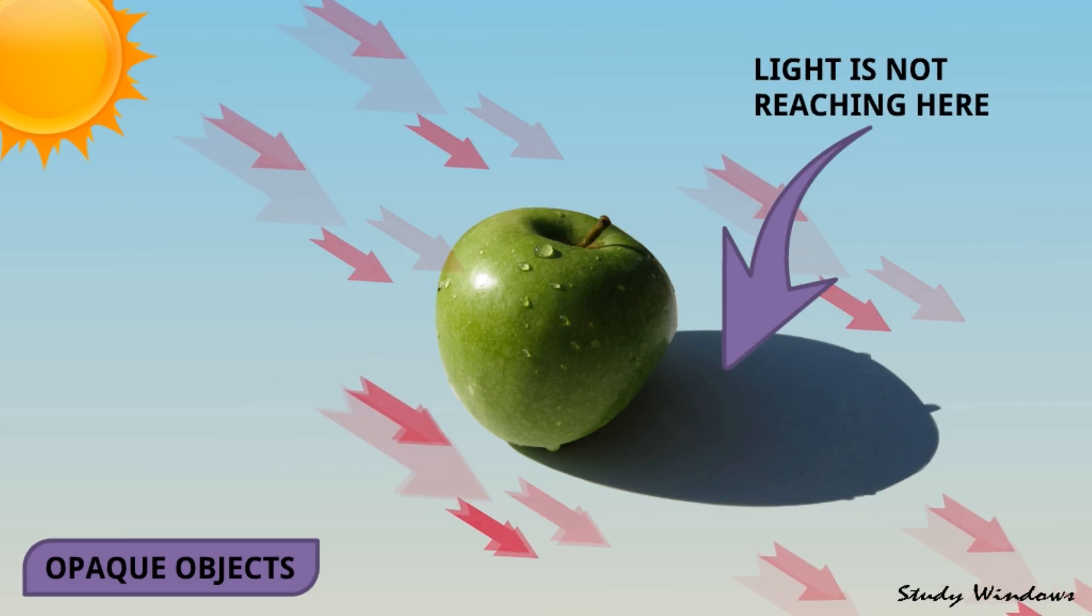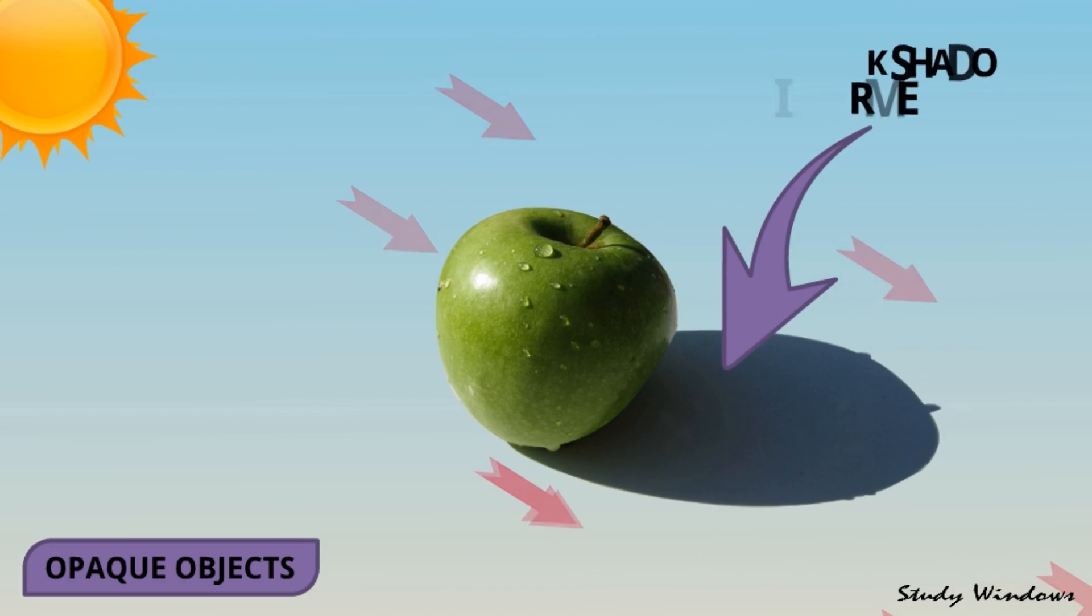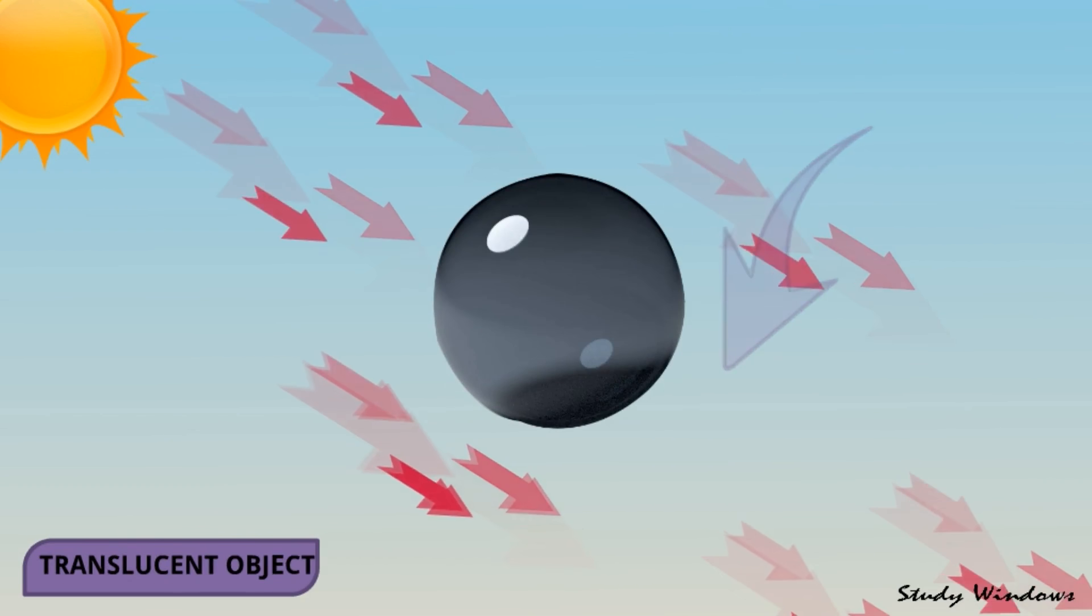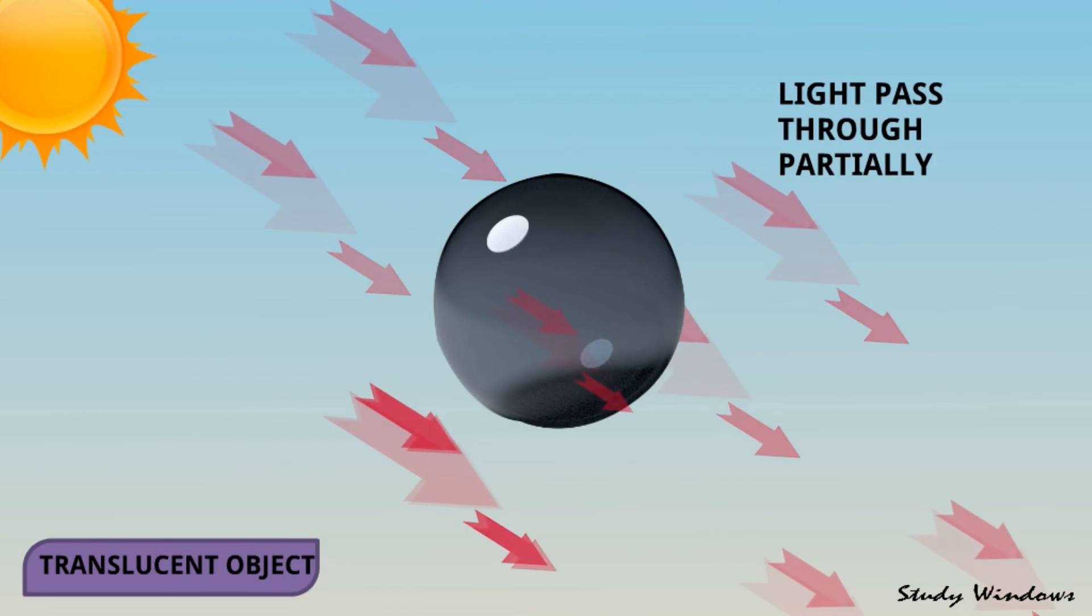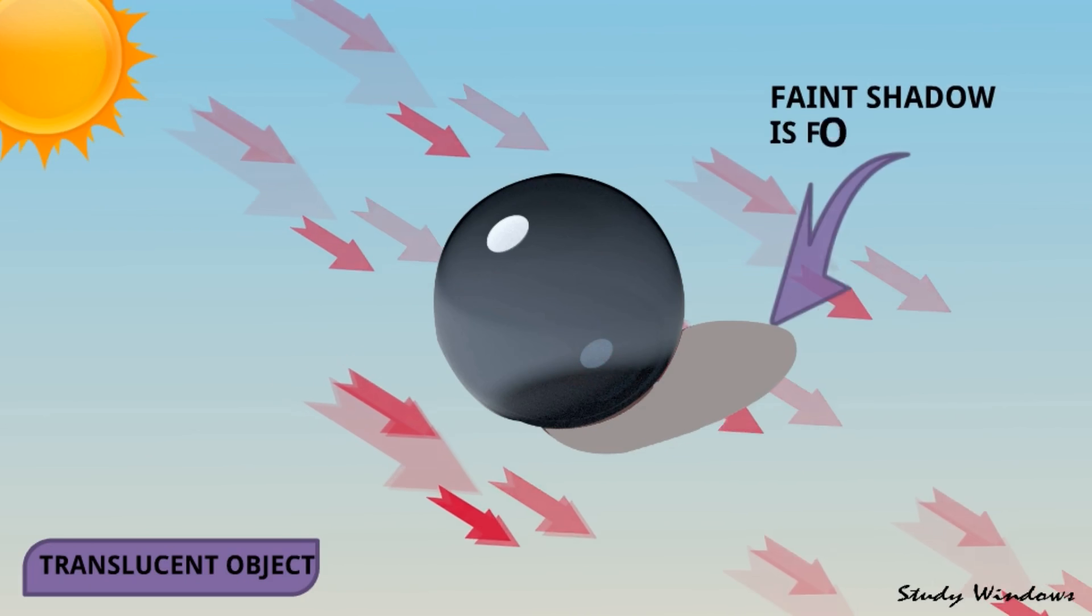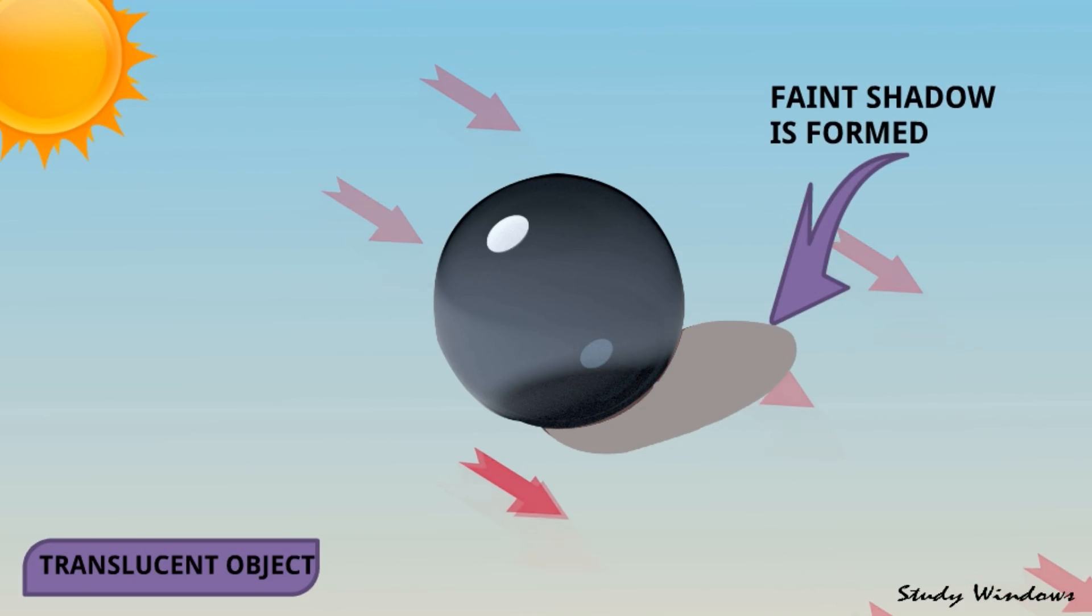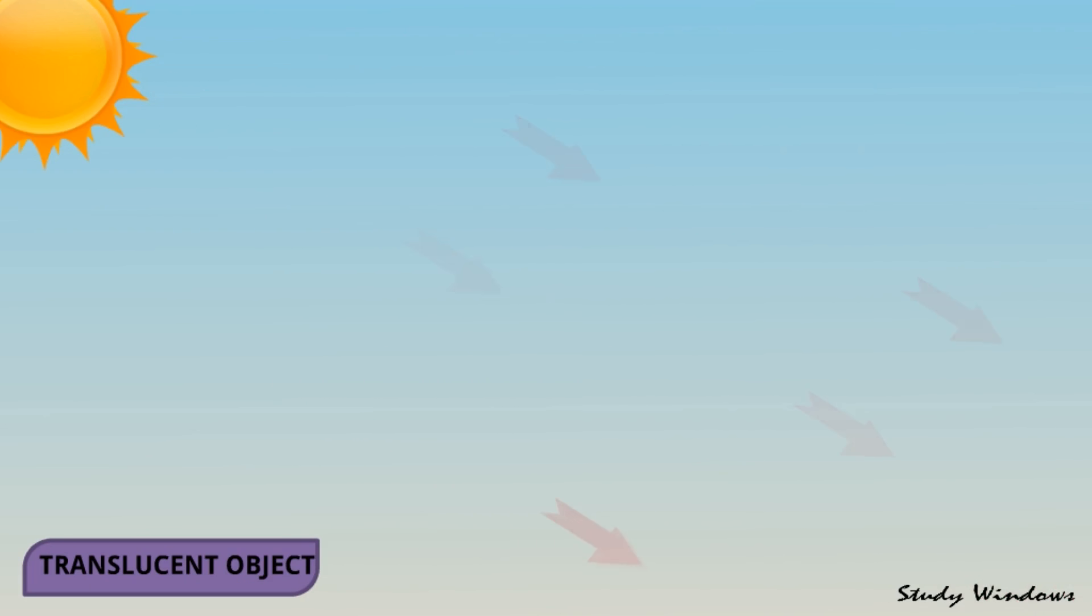Translucent object - light passes through partially, so this object blocks the light partially, so a faint shadow is formed. It's not a dark one.